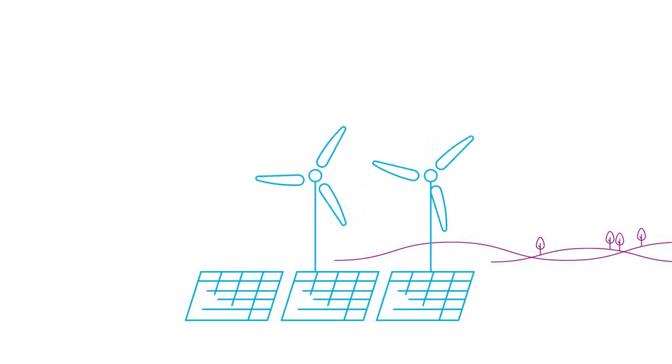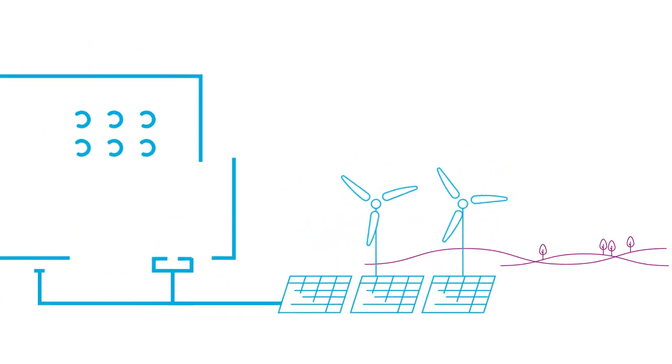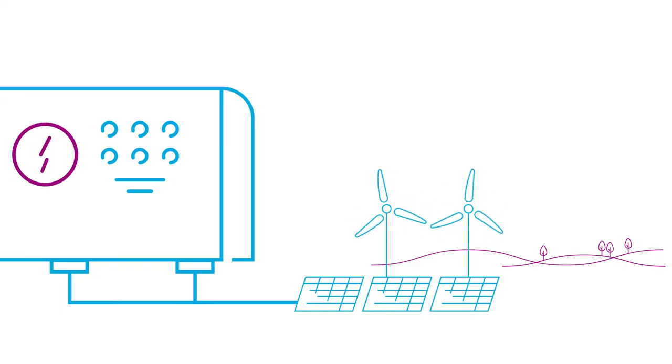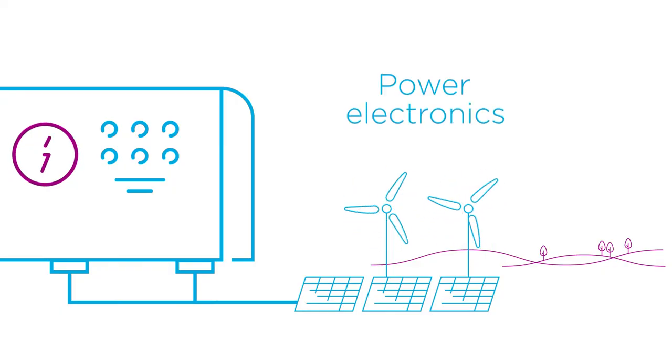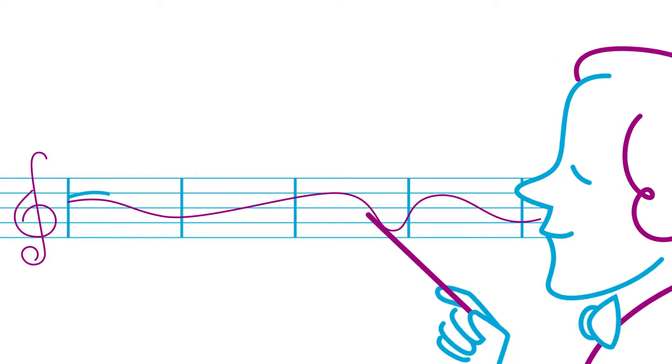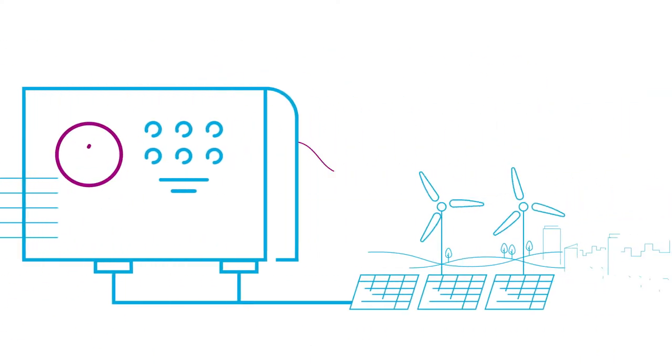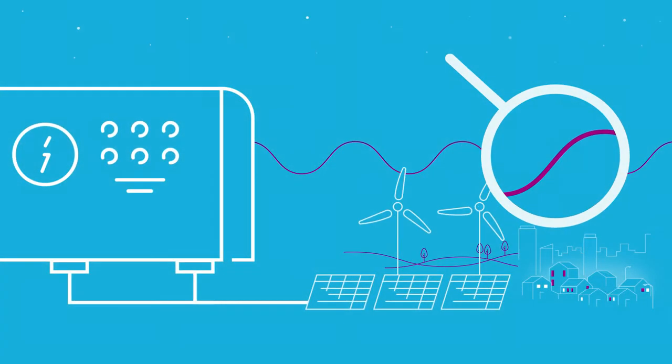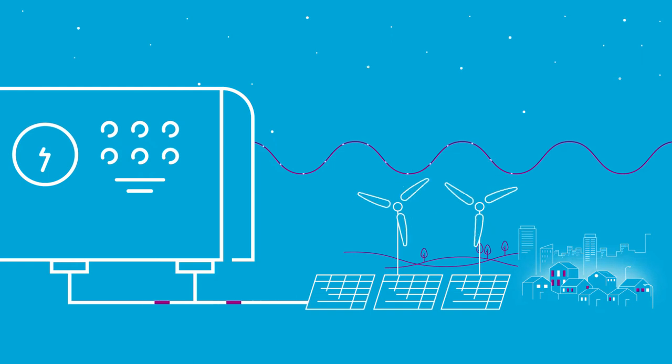With renewable energy sources, it's way different. Their generating units do not have large rotating masses. They're connected to the grid by power electronics. Power electronics devices work rather like a musician who would read his score before joining the orchestra. So he only follows the conductor, namely the grid frequency.